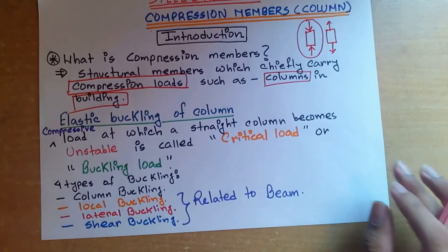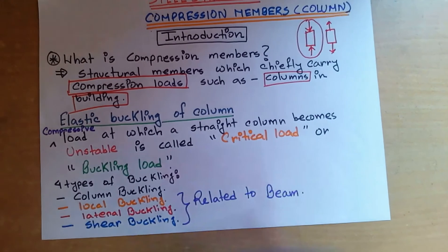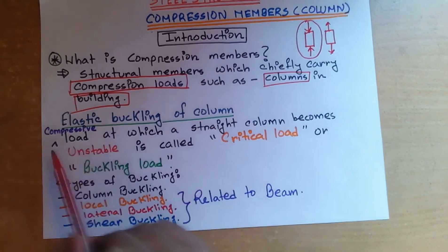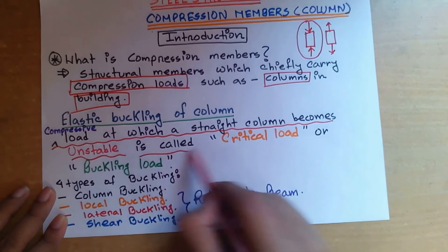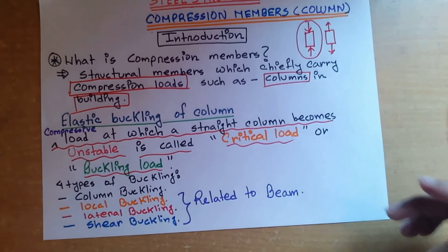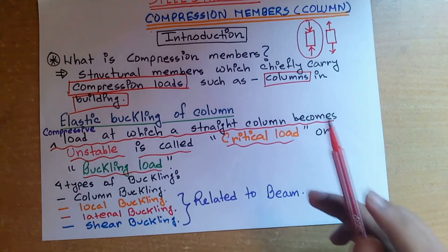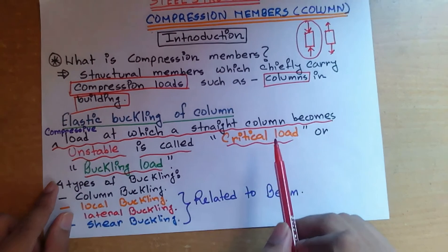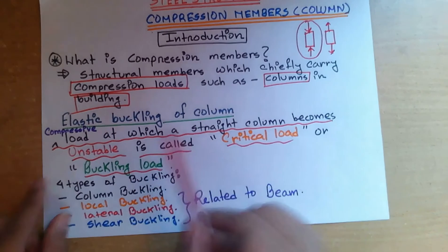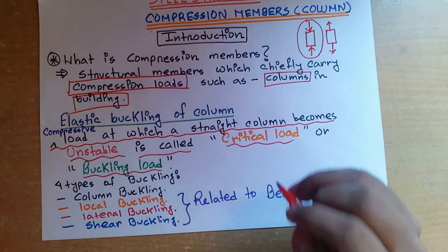Now let me introduce another term before entering into this chapter, which is elastic buckling of column. The compressive load at which a straight column becomes unstable is called the critical load or buckling load. That means the magnitude of compressive load at which a compression member will buckle very slightly and lose its stability is called the critical load or buckling load. Our column will buckle elastically when the critical load or buckling load has been imposed upon it.